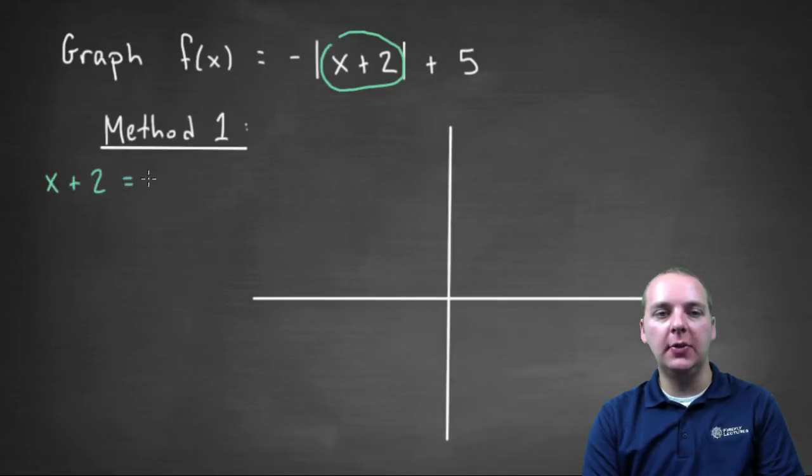So we'll take x plus two, set it equal to zero, solve for x. So this is pretty quick, x is negative two.